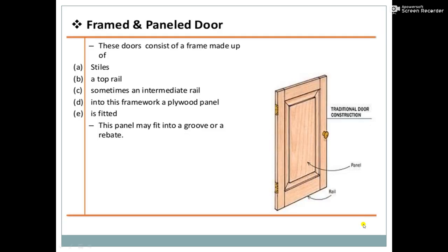The panelled or framed door consists of a frame made up of stiles, a top rail, and sometimes an intermediate rail. Into this framework a plywood panel is fitted. This panel may fit into the groove or a rebate. In this image you can see the bottom rail, the top rail, and the side stiles.